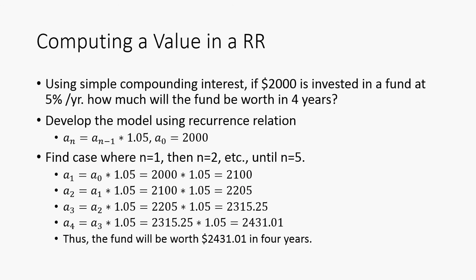So this is how we would compute a value in a recurrence relation. Using this simple compounding interest formula, if $2,000 is invested in a fund at 5% a year, how much would the fund be worth in four years? Well, we would first develop the model. We know that our principal is going to be our base case, which is $2,000.